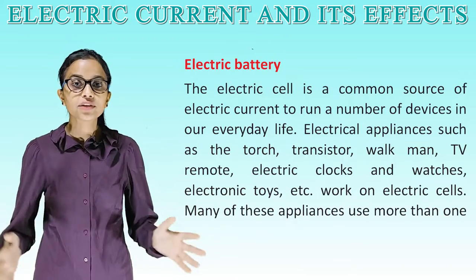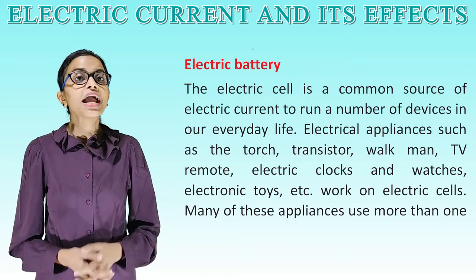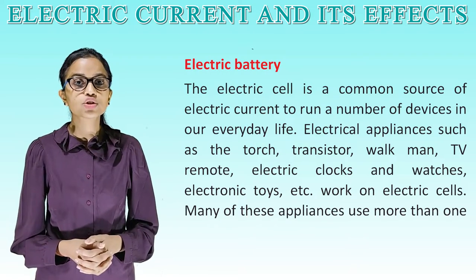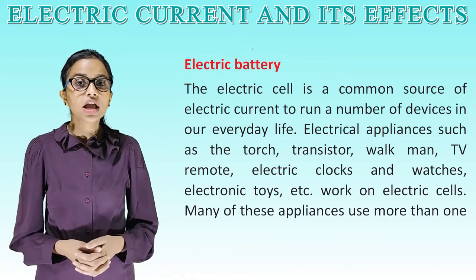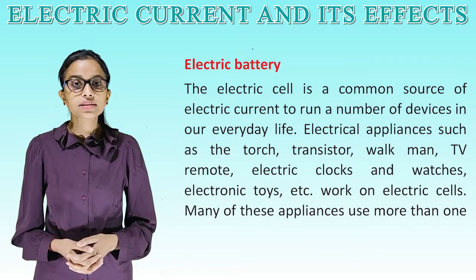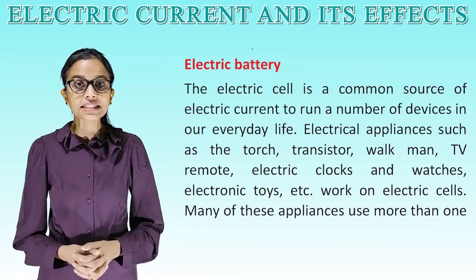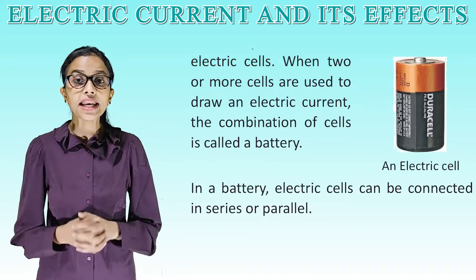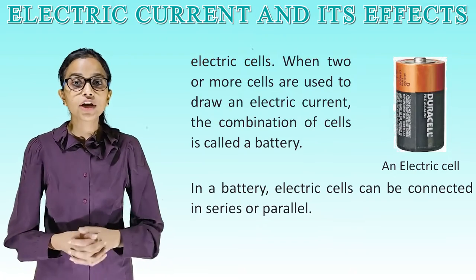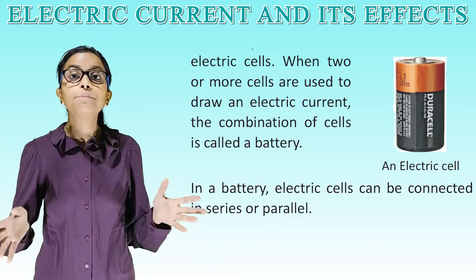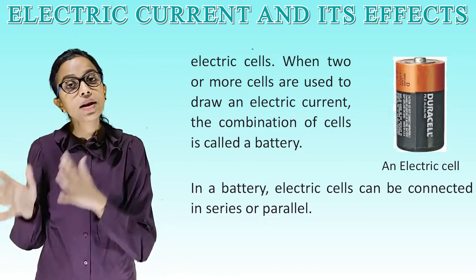The electric cell is a common source of electric current to run a number of devices in our everyday life. Electrical appliances such as the torch, transistor, walkman, TV remote, electric clocks and watches, electronic toys, etc. use electric cells. Many of these appliances use more than one electric cell. When two or more cells are used together, the combination of cells is called a battery. In a battery, electric cells can be connected in series or parallel.